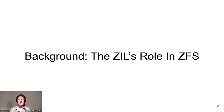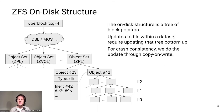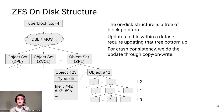Before we get to that, let's have a short recap on the ZIL's role in the larger ZFS architecture. As most of you are probably aware, the ZFS on-disk structure is a tree of block pointers, and whenever we want to update a file in that structure, we are going to modify a leaf block within an object. Since the block pointers checksum their pointees, we have to propagate the change up the tree to the uber block, and to make this crash-safe, ZFS uses a copy-on-write mechanism.